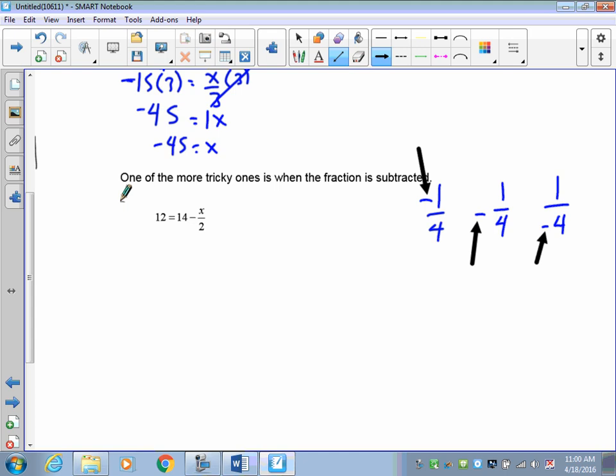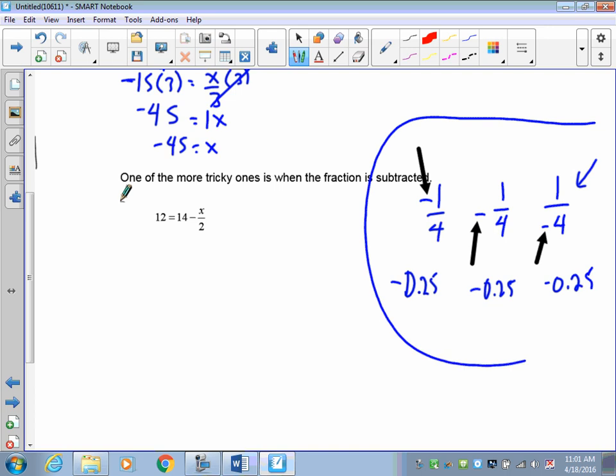Now, to do this, it's really straightforward. I want you to get your calculator out and I want you just to go negative 1 divided by 4. And then I want you to take negative, keep it, and go 1 divided by 4 and put your answer there. And here, I want you to go 1 divided by negative 4. If you do that, you're going to find that this one is negative 0.25. This is negative 0.25, and this is negative 0.25. So the question remains, why bring this up?